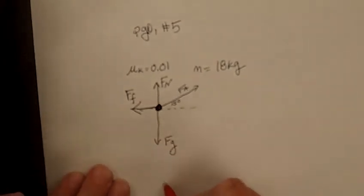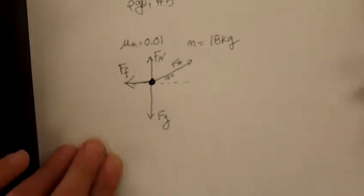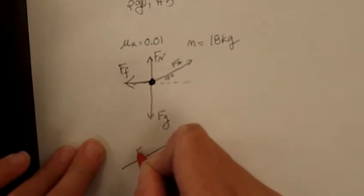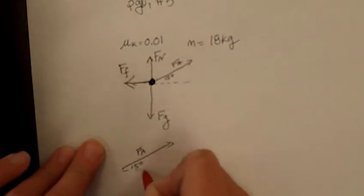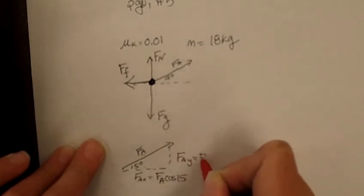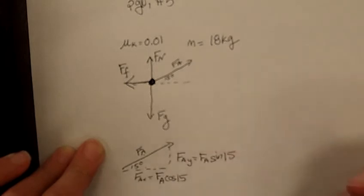So I'm going to, on the side, redraw the force applied. So I know that this force applied is at an angle of 15 degrees. So I know that FAx is equal to FA times cosine 15, and FAy is equal to FA times sine 15.